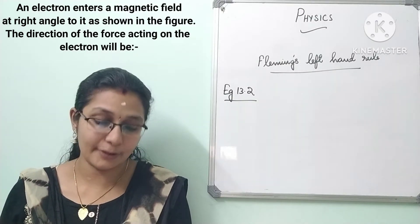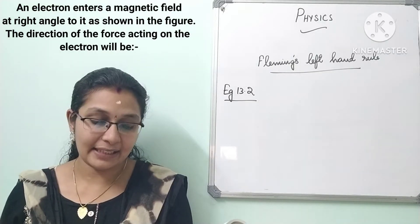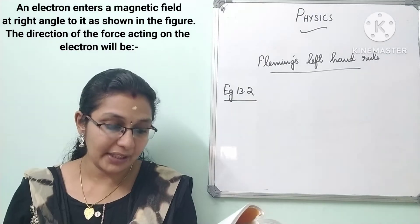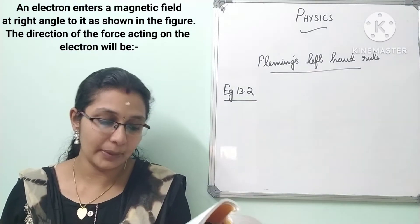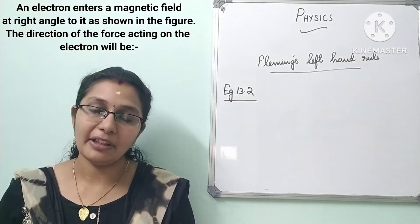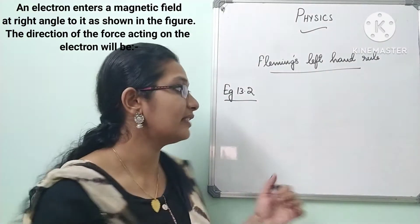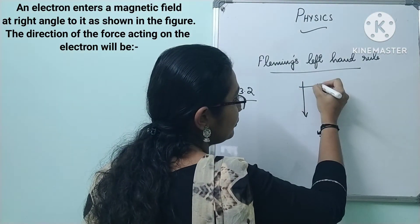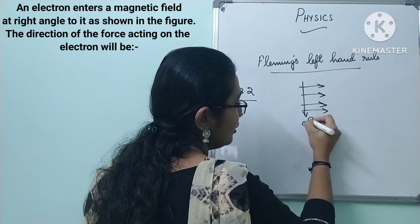A figure is given on your right hand side, so we will check that and follow the direction. The direction of force acting on the electron will be: to the right, to the left, out of the page, or into the page — they have given you the options. Let us first draw what is given in your textbook. They have given two directions.